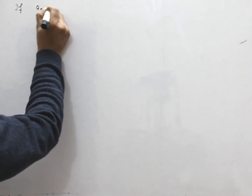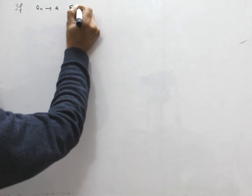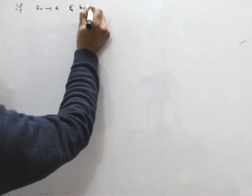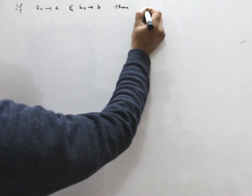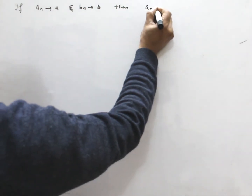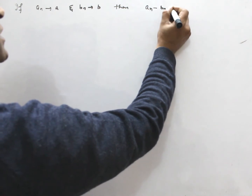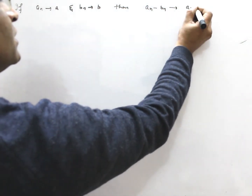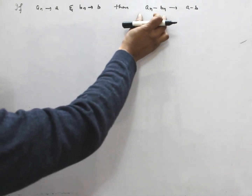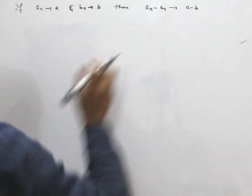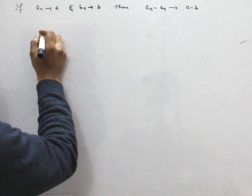If aₙ converges to a and bₙ converges to b, then the difference aₙ minus bₙ converges to a minus b. That means the difference of two sequences converges to the difference of their limits.